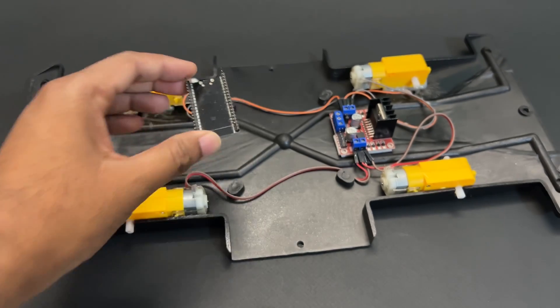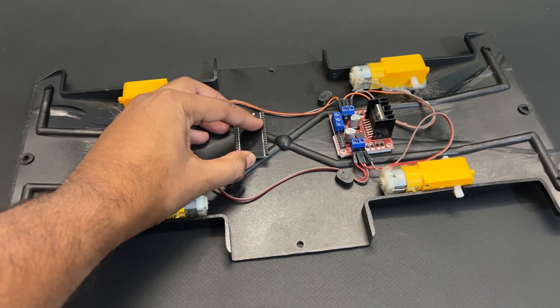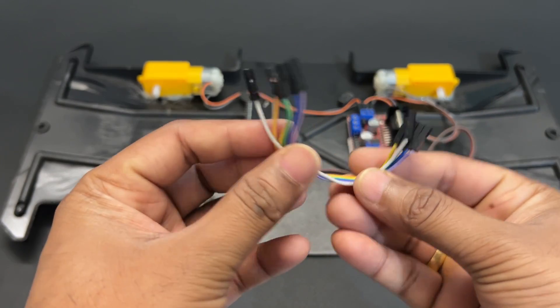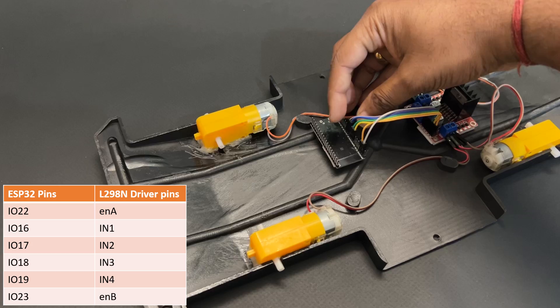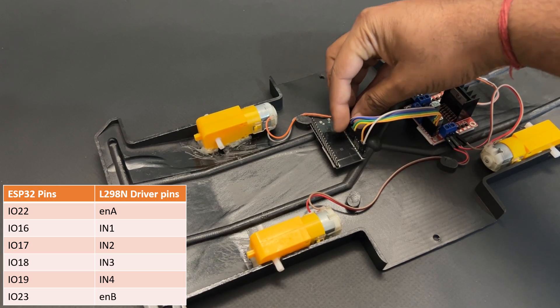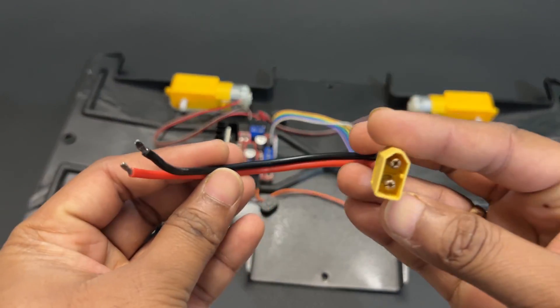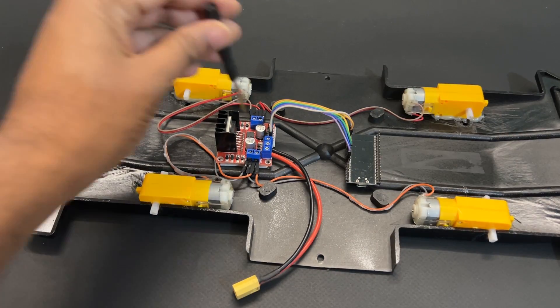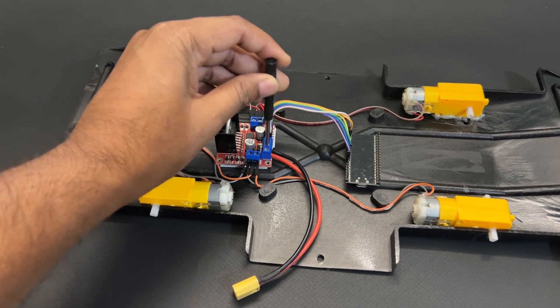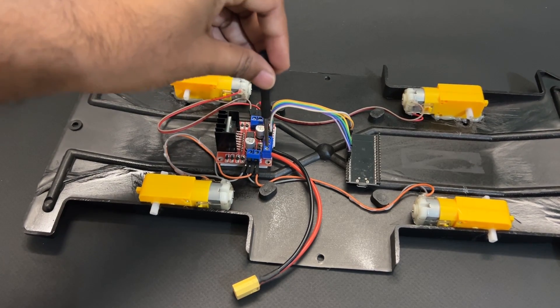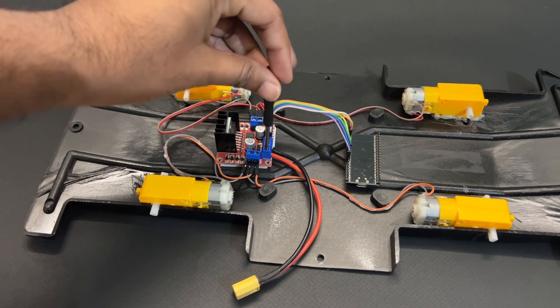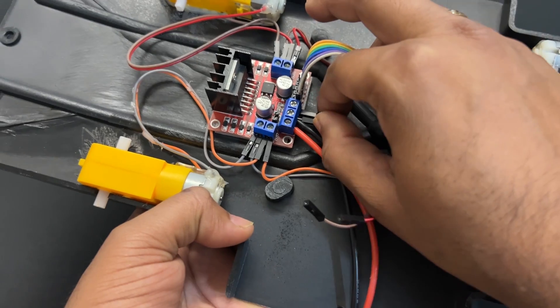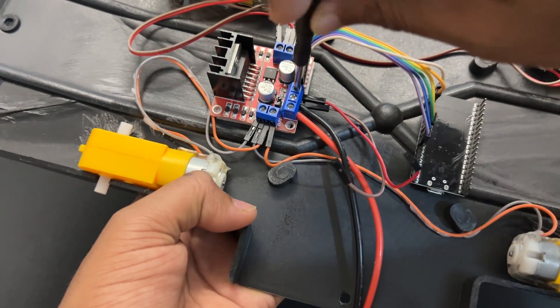Fix the ESP32 module on the car chassis using double-sided tape. Now connect the L298N motor driver module to ESP32 pins as per the table. Attach DC battery power connectors to the motor driver module 12 volt pin and ground pin. We will take plus 5 volt and ground from the L298N motor driver module and provide to ESP32 module through the 5 volt and ground pins.